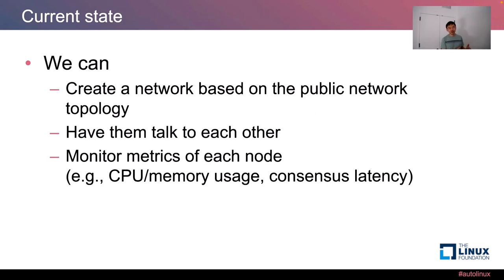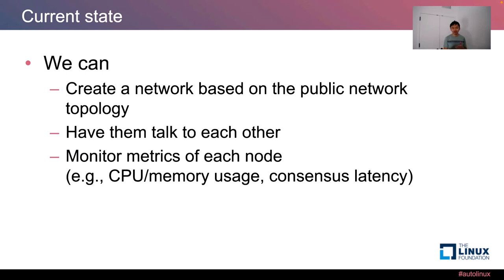After going through many iterations, what we have now is the ability to create a network based on the public network topology — survey the public network, create that in the cluster, and have nodes talk to each other. During the simulation we can monitor the metrics of each node: CPU and memory usage, and consensus latency. Being able to check CPU and memory usage of each node is extremely powerful, since this is a peer-to-peer open membership network where it's practically impossible to check other nodes' resource usage otherwise.